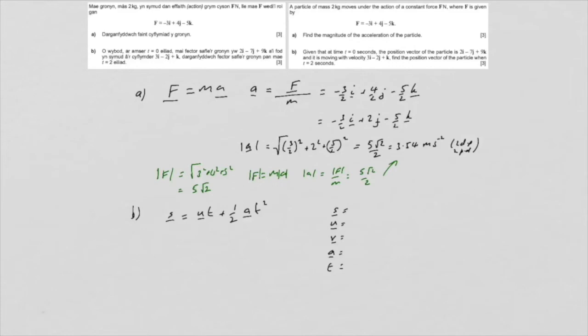Well, S is what we're trying to find. We know that U is the initial velocity, which is 3i minus 2j plus k. We don't care about V. And A, we've just worked out above, is minus 3 over 2i plus 2j minus 5 over 2k. And our time is 2 seconds.